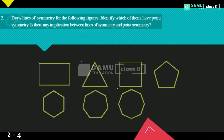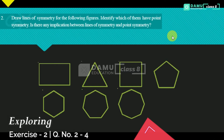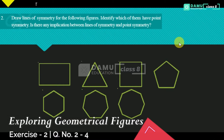Our second question is: draw lines of symmetry for the following figures, identifying which of them have point symmetry. Is there any implication between lines of symmetry and point symmetry? So, here, for the rectangle, as we know, it will have two lines of symmetry — one is vertical and another one is horizontal. This is a rectangle.